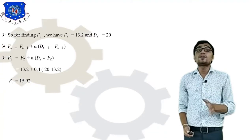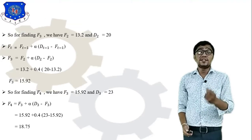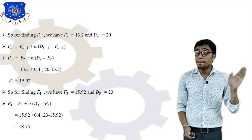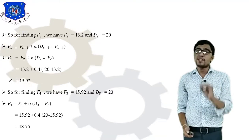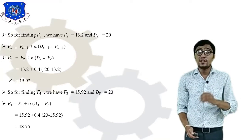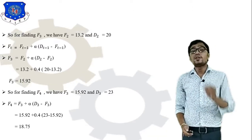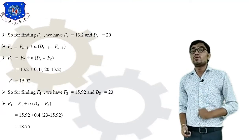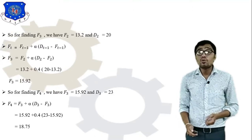Now we need to find F4. We have F3 = 15.92 and from the table D3 = 23. The equation is F4 = F3 + α × (D3 − F3). Putting in the values: F4 = 15.92 + 0.4 × (23 − 15.92) = 18.75.